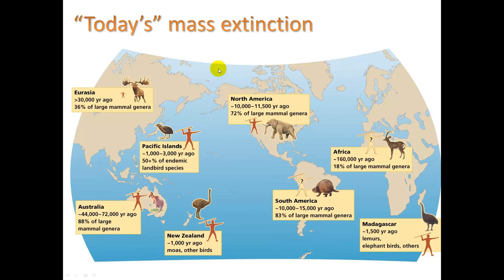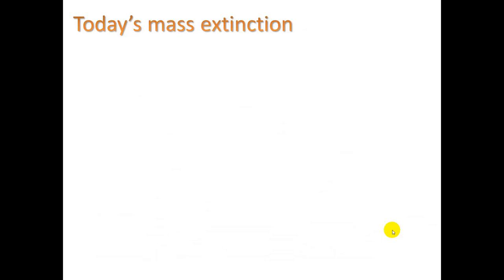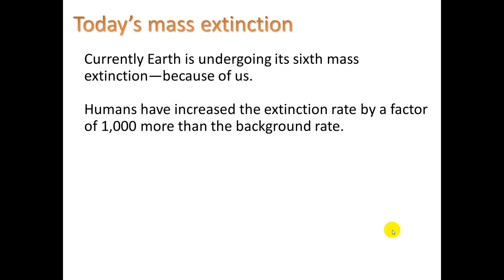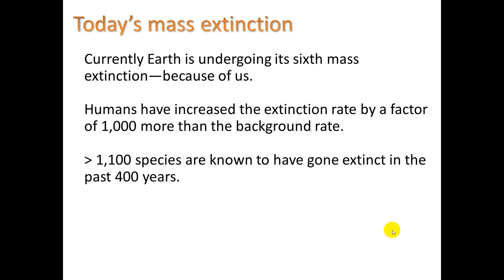This is today's mass extinction — the era of the human. Even going back 30,000 years ago, we can see a big drop in large mammals in Eurasia. In North America, 10,000 years ago, there was a loss of 72% of large mammals. In all these areas throughout the world, with the presence of human hunting, we see a large drop in the number of large mammals, likely due to over-hunting. But today, right now, Earth is undergoing its sixth mass extinction because of us — and not just because of hunting. Humans have increased the extinction rate by a factor of a thousand more than the background rate. More than 1,100 species are known to have gone extinct in the past 400 years.